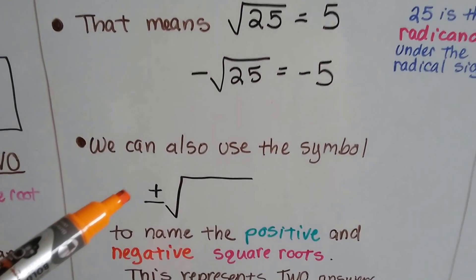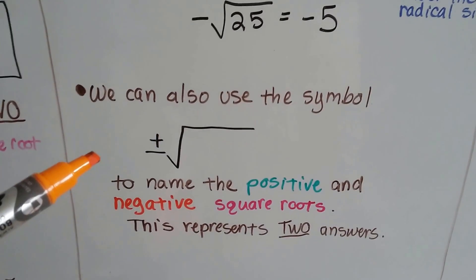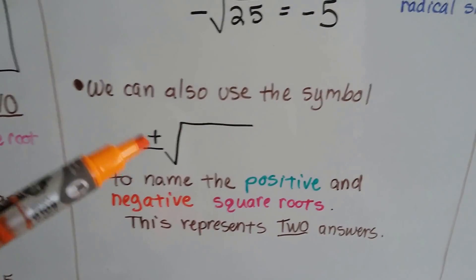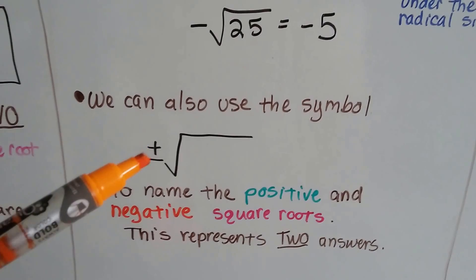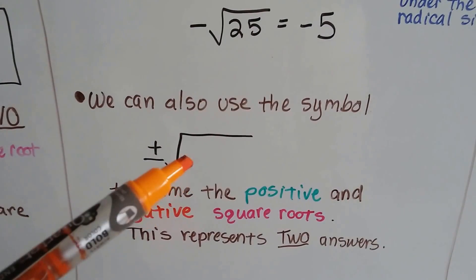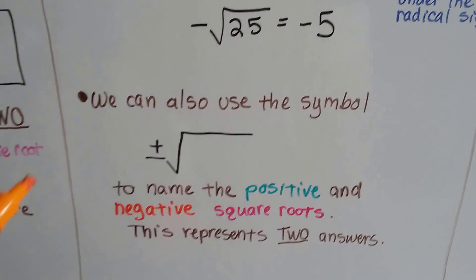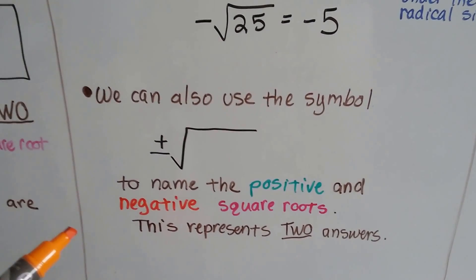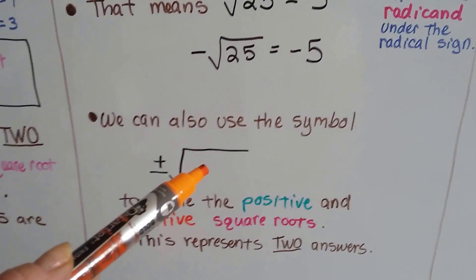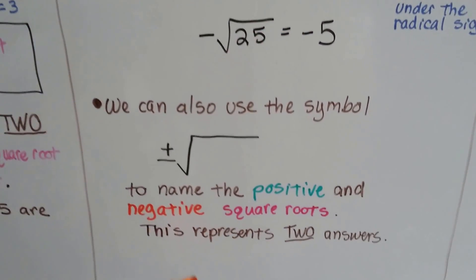We can also use the symbol with a plus or minus in front of it, but you have to be careful because that means two answers. When you see a radicand inside the radical with a plus or minus in front of it, that means they want you to name the positive and negative square root. If 25 was in there, you're going to have two answers: positive 5 and negative 5.